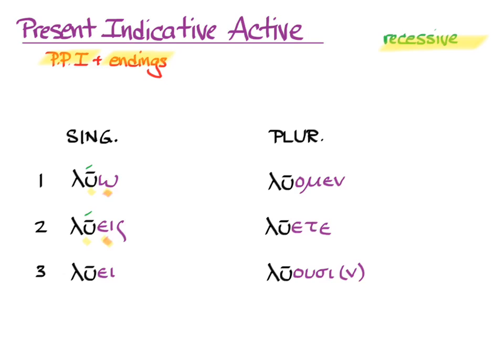In the third person singular, we see λύει, so it's a long last syllable. And we count one, two, and put in an acute.